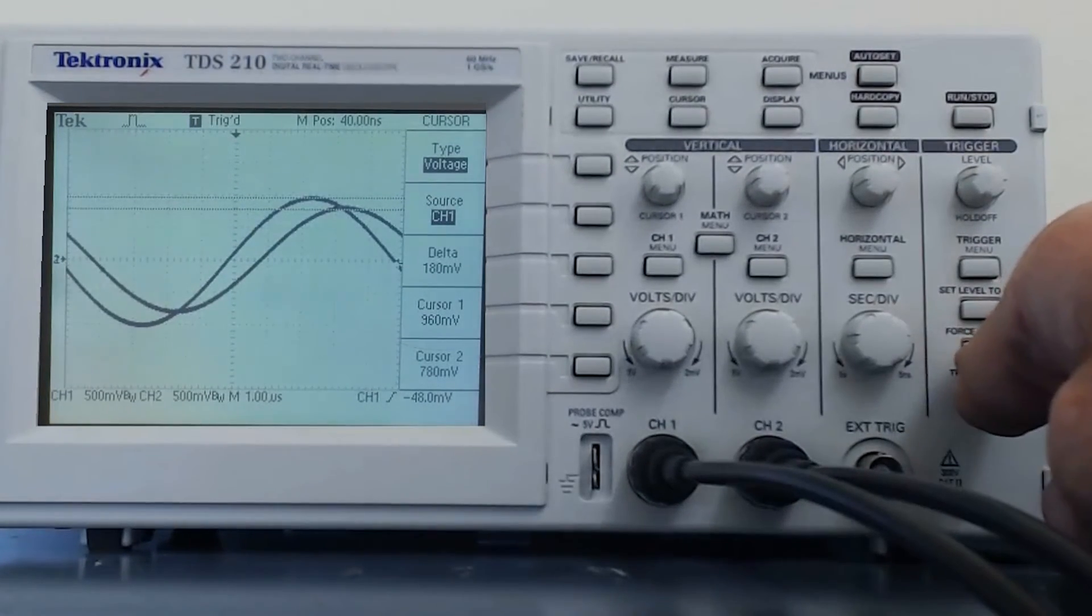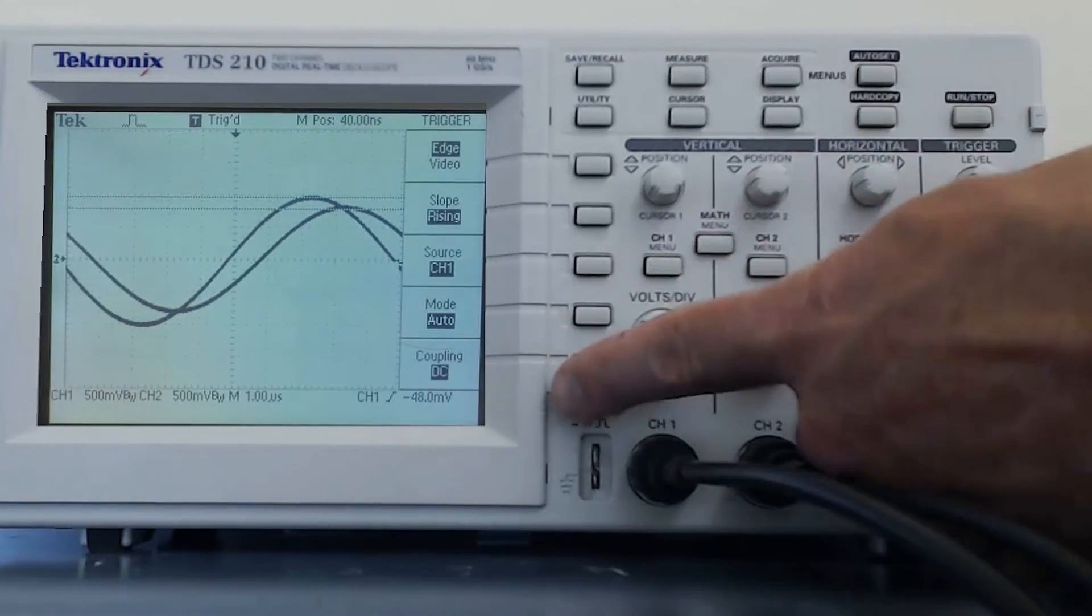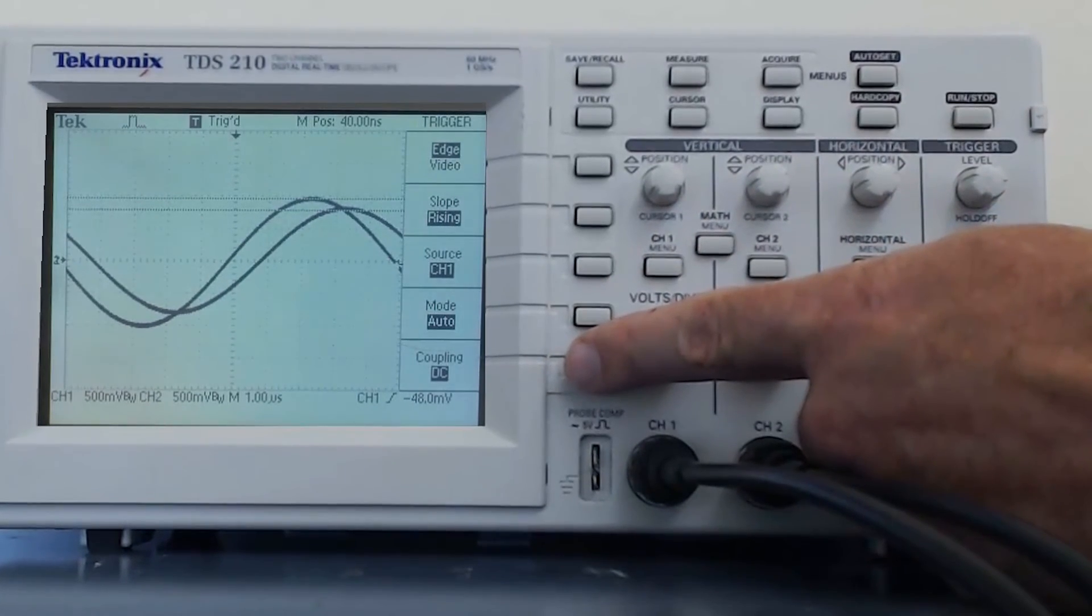The trigger menu button brings up several options for the trigger. I will not go through them all, but let's take a look at the coupling. Sometimes when you are trying to look at a signal, there will be a lot of noise present and it will be difficult to obtain a stable waveform. By adjusting the coupling on the trigger, very often this can be corrected. The options we have for coupling are DC coupling, noise reject.